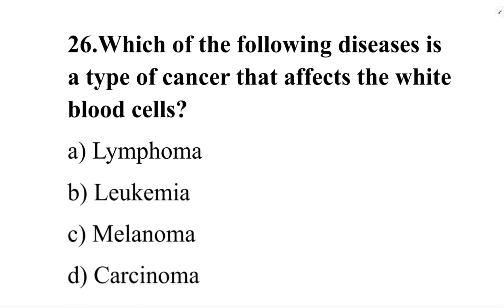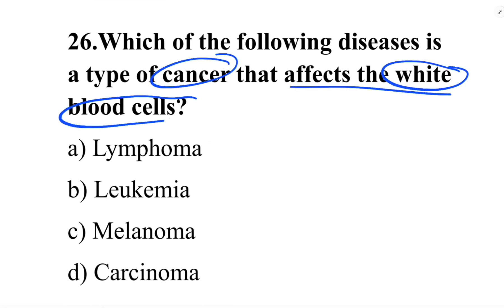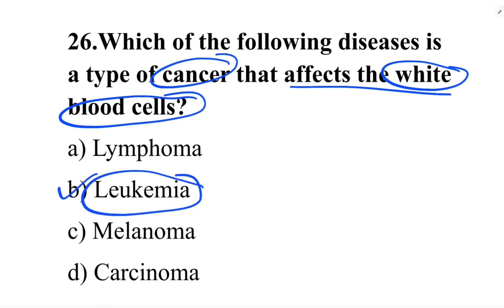Next question: which of the following diseases is a type of cancer that affects the white blood cells? Option A: lymphoma. Option B: leukemia. Option C: melanoma. Option D: carcinoma. The correct answer is option B, leukemia. Leukemia affects the white blood cells.